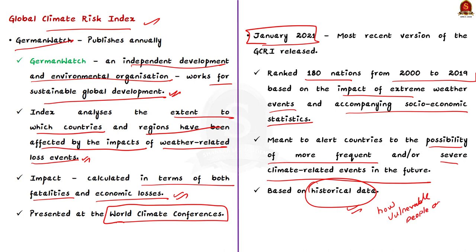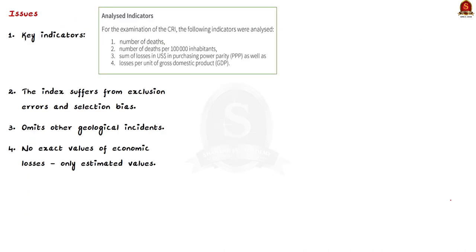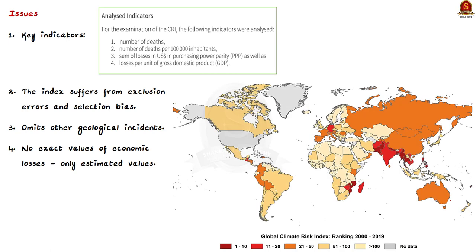The author is of the view that this index cannot be used to make logical predictions about future climate change, because the methodology and interpretation of country rankings have serious flaws. The author puts forward four reasons to prove why this index should be used with caution when making recommendations.